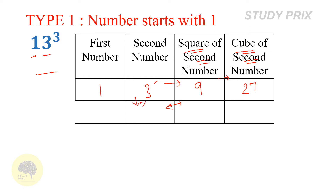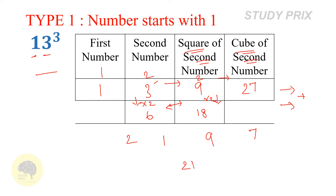In the two middle table cells, write double the number above each. Double of 3 is 6, and double of 9 is 18. Now add the two rows. Remember, while adding write only one digit and carry the rest. For 27: write 7 here, carry 2. 2 plus 9 is 11, plus 18 is 29: write 9, carry 2. 2 plus 3 is 5, plus 6 is 11: write 1, carry 1. 1 plus 1 is 2. So the cube of 13 is 2197.